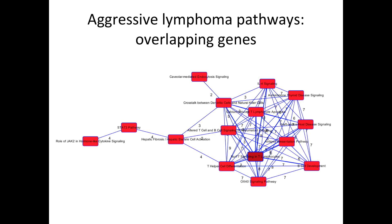Here's another problem. This was a study I did looking at aggressive lymphoma. These are some of the pathways overrepresented in genes that changed in aggressive lymphoma. If there's a line between pathways, they share genes — and that's the number of genes they share. Look at this rat's nest. These are only the 25 top overrepresented pathways. T helper cell differentiation shares seven genes with the AUX40 signaling pathway. Which pathway do I take? Are they really the same pathway, and we're just artificially dividing them up? Today I'm going to tell you how to generate your own pathways without relying on what experts did maybe 15 years ago.